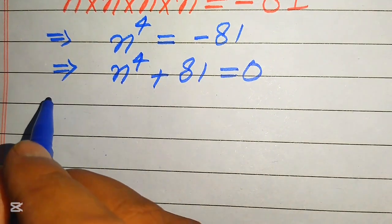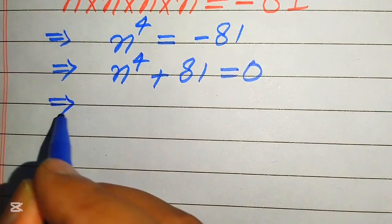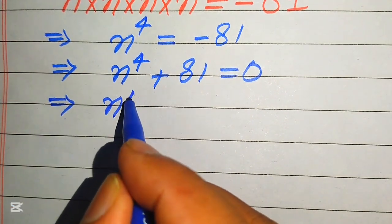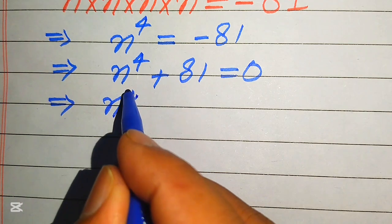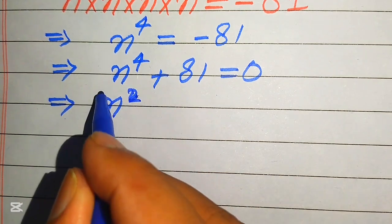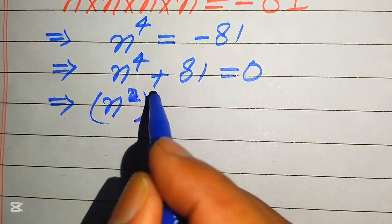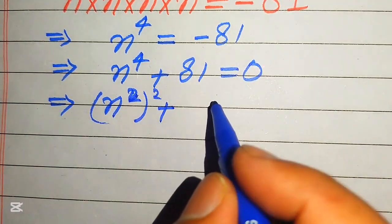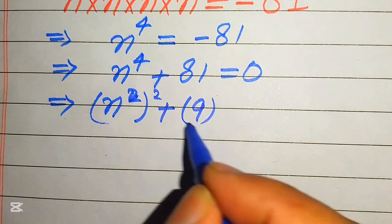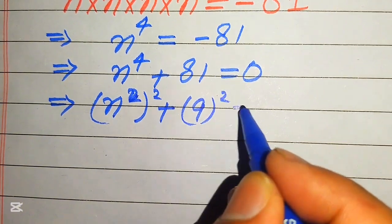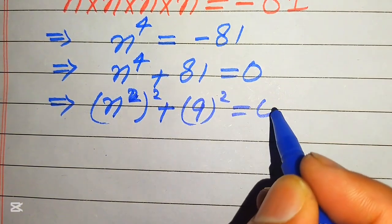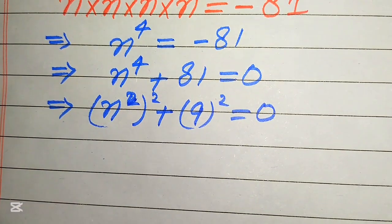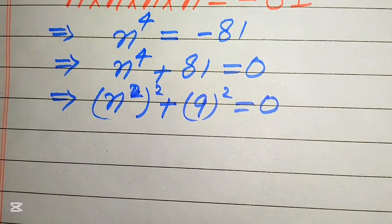Now we rewrite this equation by writing n to the power of 4 as n squared whole squared, and we write 81 as 9 squared. So the equation becomes (n²)² + 9² = 0.